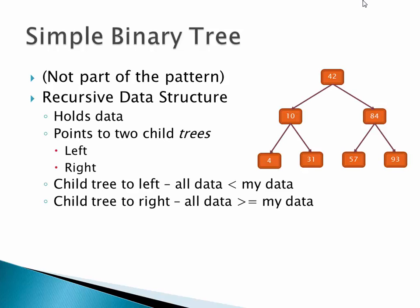This is number five in the series. It's a recursive data structure — each node holds data and points to two child subtrees, which is where the recursion comes in. For example, we might have a node 42 with a subtree on the left and a subtree on the right. The basic idea with a sorted binary tree is that all data on the left is less than the current node, and all data on the right is greater than or equal to the current data.